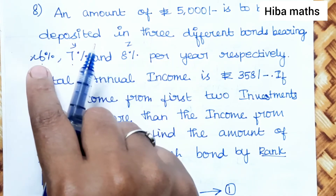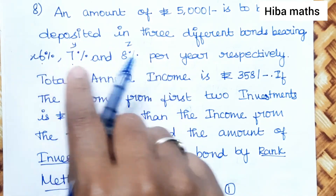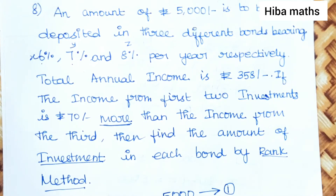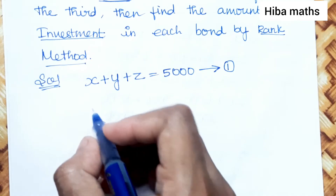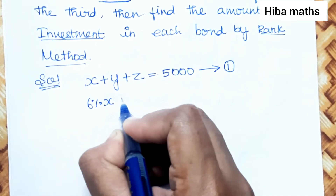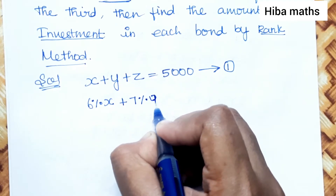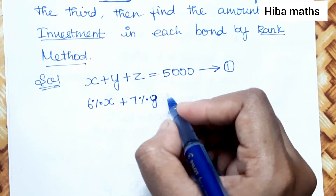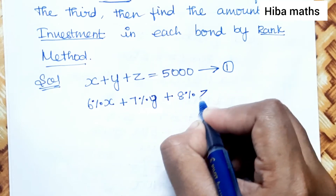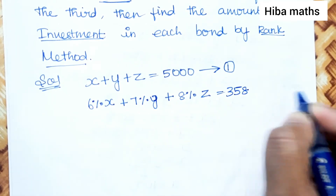The bonds bear 6%, 7%, and 8% interest respectively. The total annual income is rupees 358. So the second equation is: 6% of X plus 7% of Y plus 8% of Z is equal to 358.